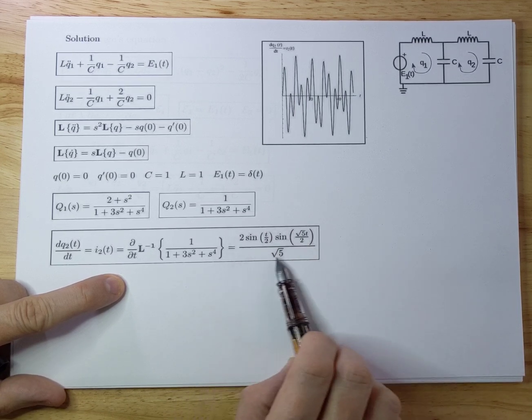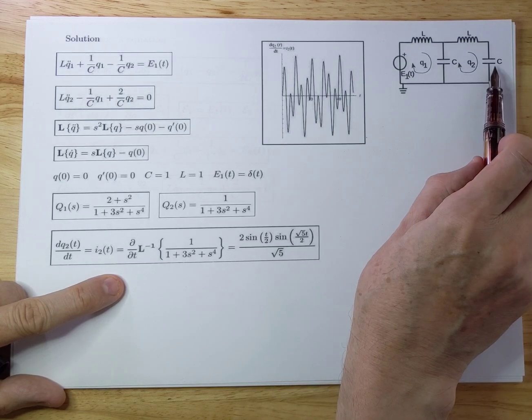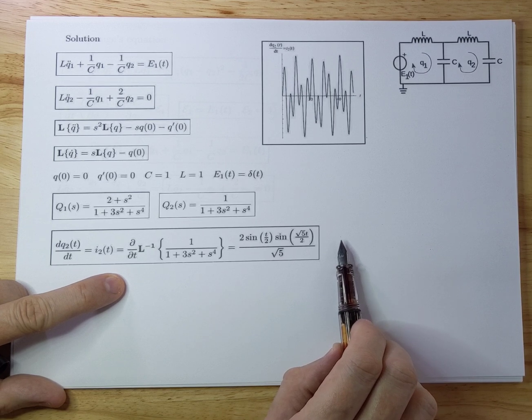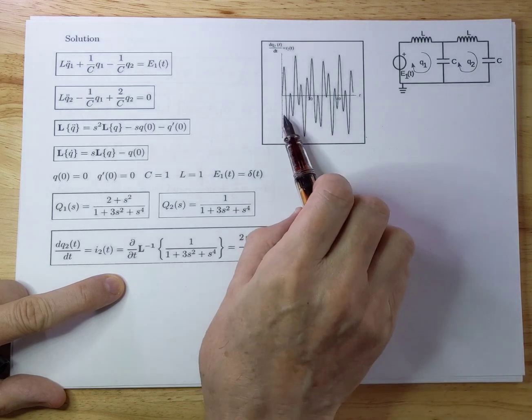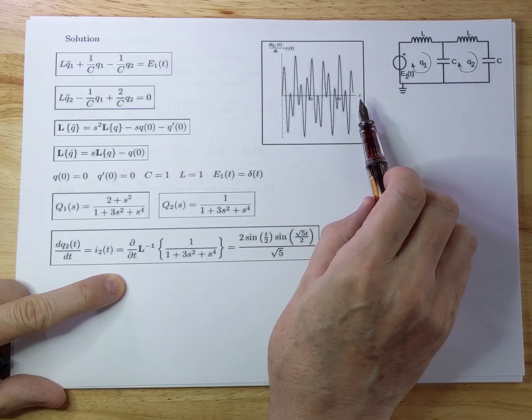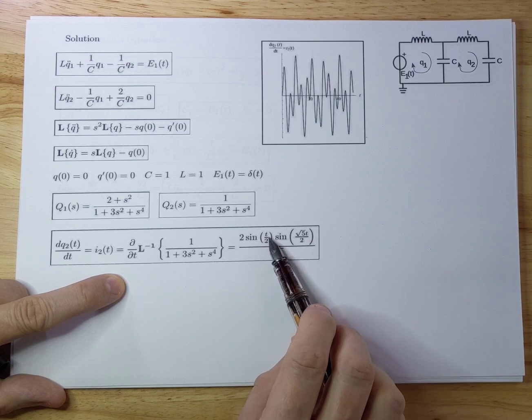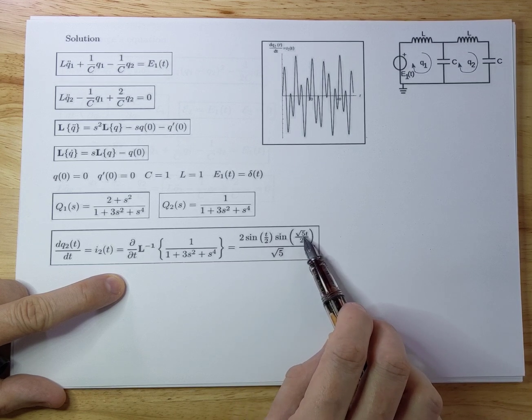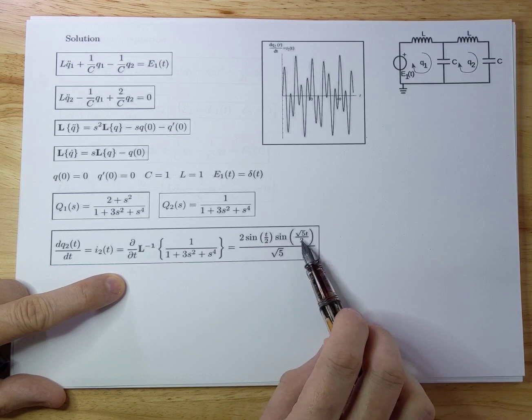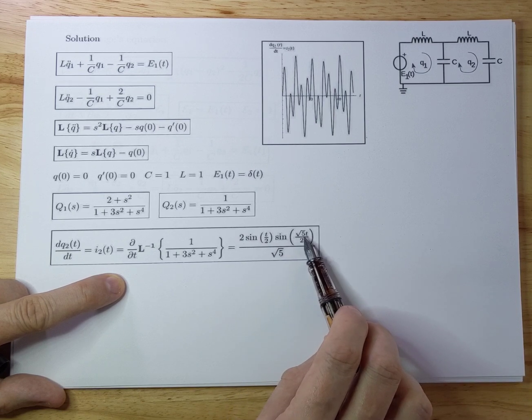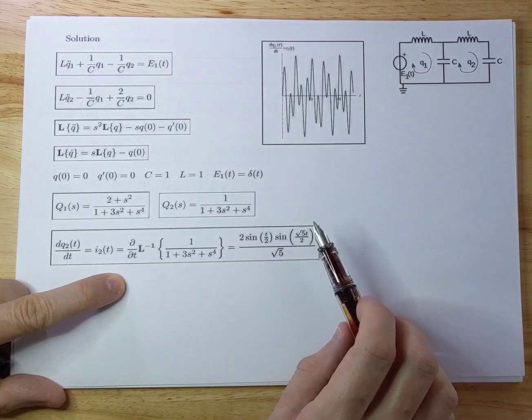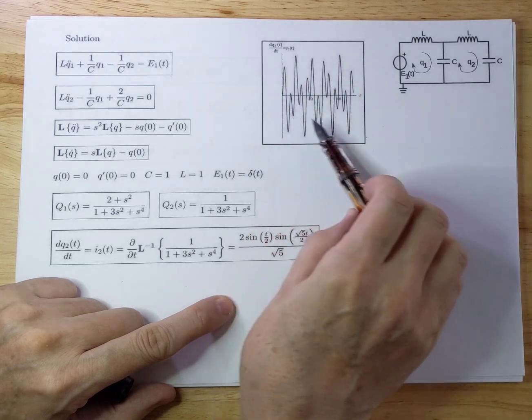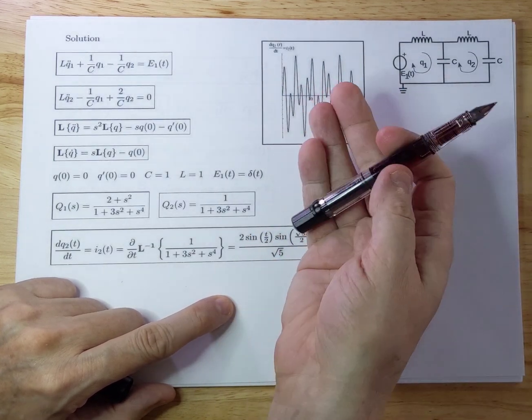And this is actually the current running through this capacitor from t bigger than zero all the way up to infinity. And you see a picture of that. And you see it's very chaotic. And it never repeats. The reason it doesn't repeat is because there's no relationship with integers between this t over 2 and this square root of 5 t over 2. There's no repetition there. If you would have had t and 3t here, you would see repetition in your response here. But there is none, because it's a square root of 5.